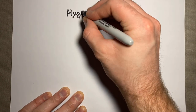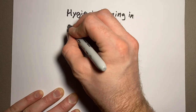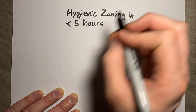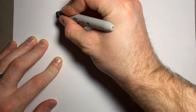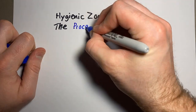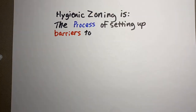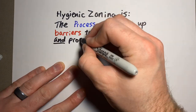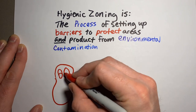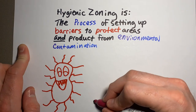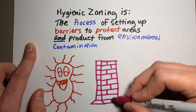Today we're going to talk about hygienic zoning in food manufacturing plants in less than 10 minutes. If you look up hygienic zoning as a definition in a book, it's going to say the process of setting up barriers to protect areas and product from environmental contamination. There are a number of different things to keep those nasty pathogens far from your finished product.